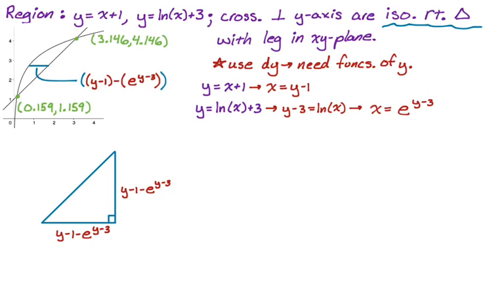And then I know the area of a triangle is one half base times height. So I know the area of a cross section that I'm dealing with is one half. And then the quantity y minus 1 minus e to the y minus 3 squared. So it's that whole quantity squared, one half base times height.